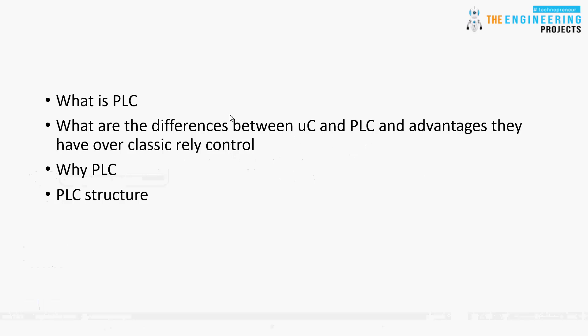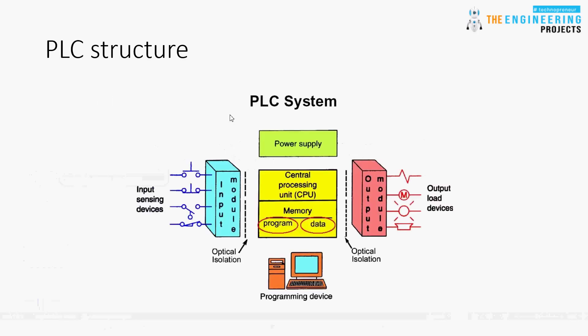The last topic is PLC structure. As you can see in this picture, these are the main parts of the PLC. On the left are the input modules, which are connected to the external world - input sensing devices, switches, push buttons, everything you can name as an input to your system. These input modules have digital inputs and analog inputs. Something that is simply on or off, like a switch, push button, or limit switch, is a digital input because it has only two values. But something like temperature or pressure, which is an analog signal, is an analog input.